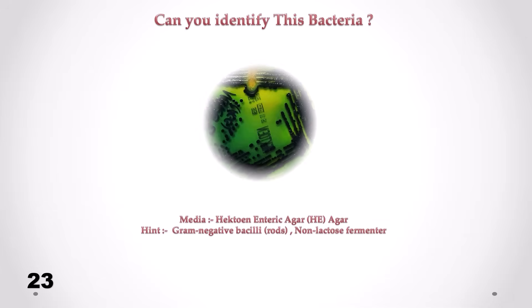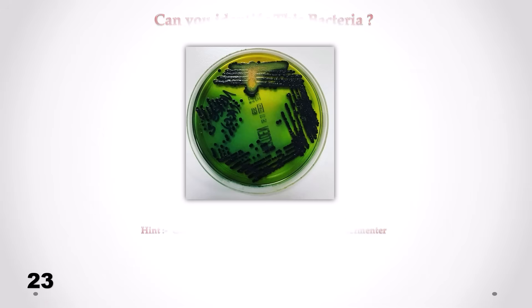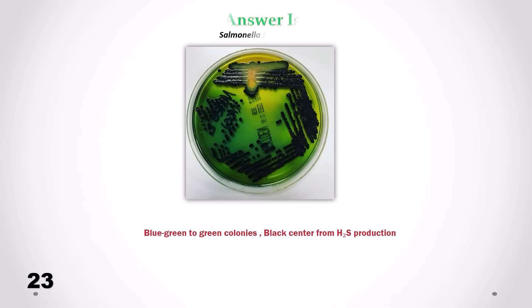Can you identify this bacteria? Correct answer is Salmonella. We can see blue-green to green colonies with black centers from H2S production.